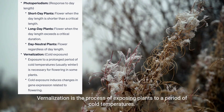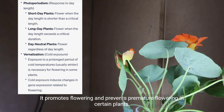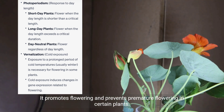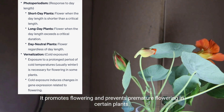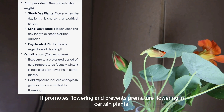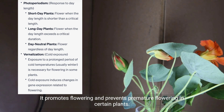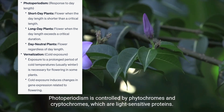Vernalization is the process of exposing plants to a period of cold temperatures. It promotes flowering and prevents premature flowering in certain plants. Photoperiodism is controlled by phytochromes and cryptochromes, which are light-sensitive proteins.